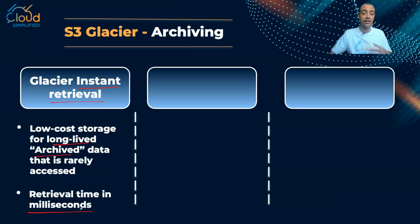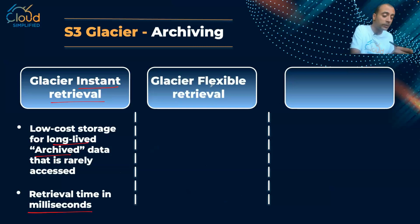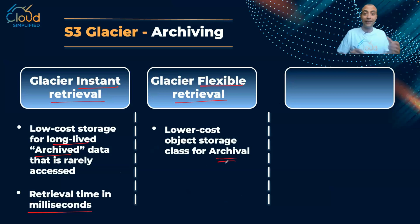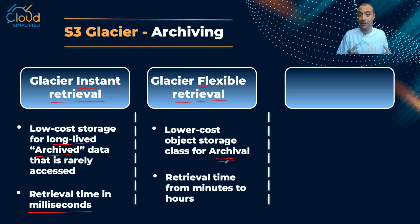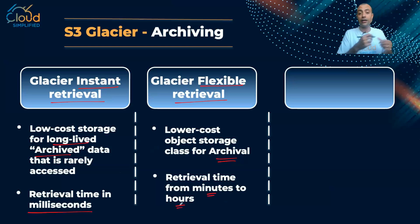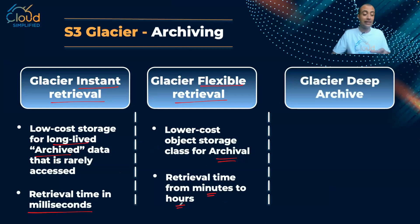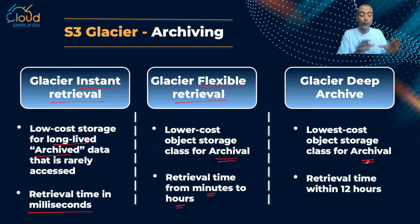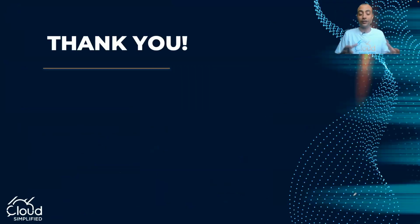The second storage class is Glacier Flexible Retrieval. Similar to Instant Retrieval in that it offers lower-cost object storage for archival, but the retrieval time is not in milliseconds — it can range from minutes to even hours. The last one is Glacier Deep Archive, the absolute lowest-cost object storage for archival. However, be aware that object retrieval can take up to 12 hours or even more.